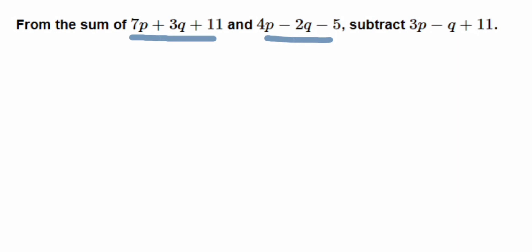So the first thing is we're going to add up the two expressions and then we'll get the result. So this is the solution here. I'm going to use the column method, so I'm going to write the first one: 7p + 3q + 11. And the next one, we are adding the second expression.